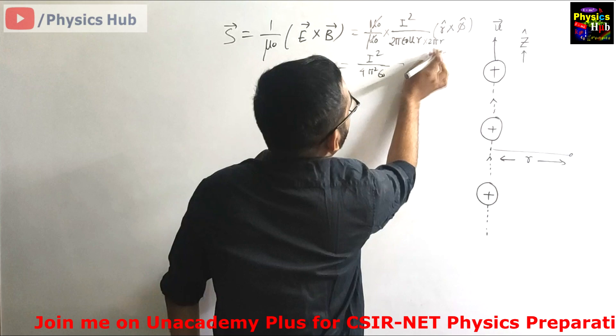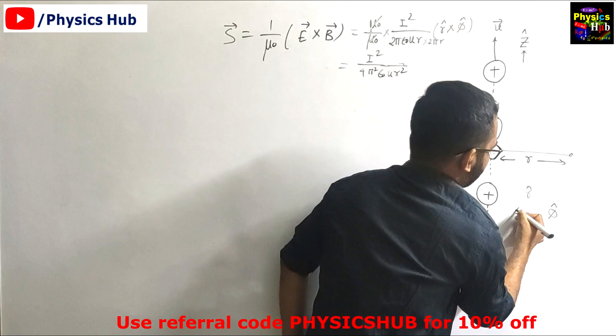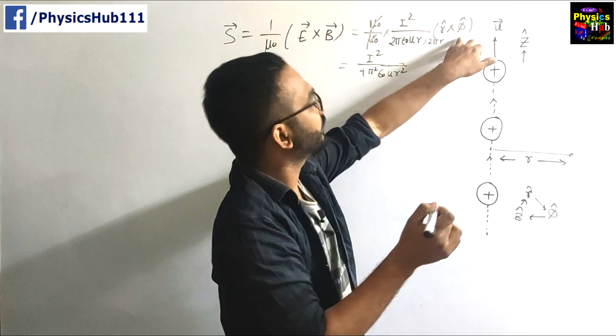Into r cross phi. We know that r, phi, z spherical polar coordinates are written in this way. If you take the cross product of r and phi you get z, phi and z you get r, z and r you get phi. Here you have to take the cross product of r cap cross phi cap, so it will give you z cap.